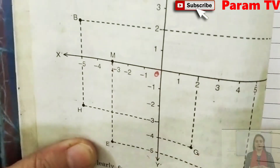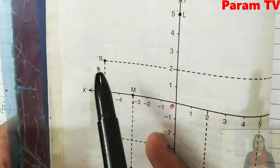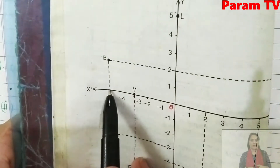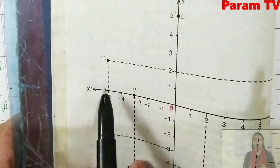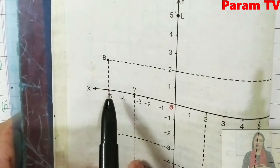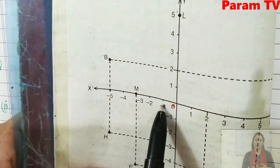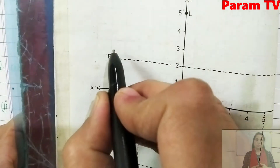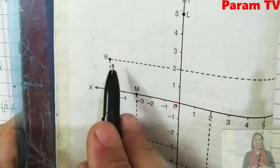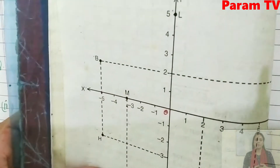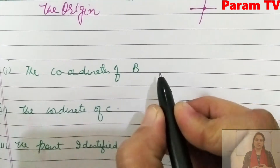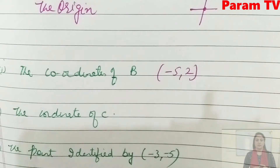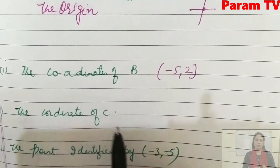Coordinates are the x and y values of a point. Look at point B. The first value we write is on the x-axis. Count: minus 1, minus 2, minus 3, minus 4, minus 5. So the x value of B is minus 5. And towards y, it is 2. So the coordinates of B are (minus 5, 2).